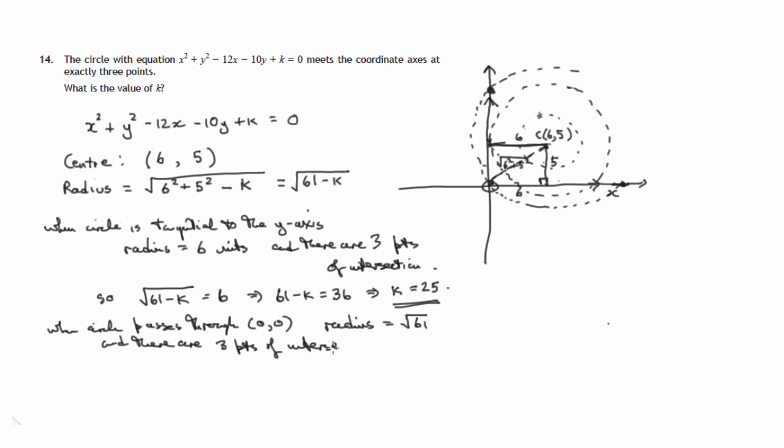It's just to state that we know what's going on there. We're answering the question. So the radius, which is the square root of 61 minus k, will now be equal to the square root of 61. So square both sides, get 61 minus k equals 61. That can only happen if k is zero. So the second possibility is k equals zero. And that's all the possibilities there are.